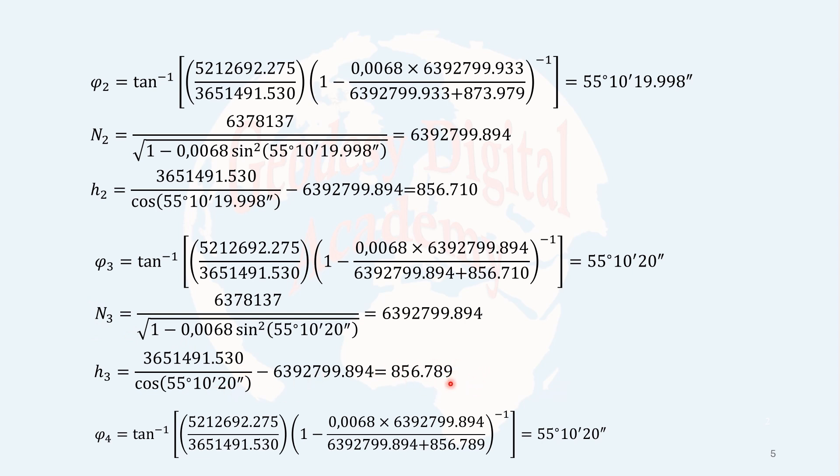And I, again, repeat the process. Put the h here, put the n here, and when I compute phi4, it will be the same. So, this means the solution is convergent. But, I have done this up to 4th iteration. However, if you want to get to millimeter level for the height, you have to repeat this process more until the difference between the last two h values is less than 1 millimeter.